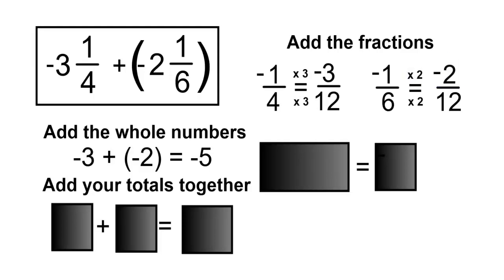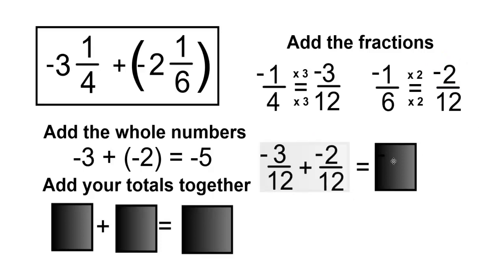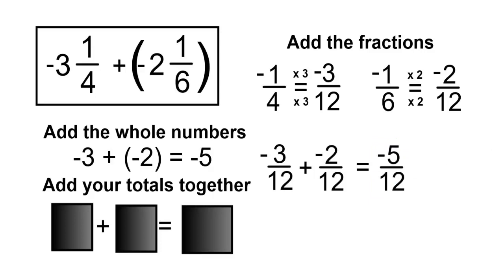Now that we have a common denominator, we can add the fractions together. So negative 3 over 12 plus negative 2 over 12. And negative 3 plus negative 2 is negative 5, and the denominator stays the same at 12.